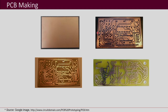Now let us look into the PCB making process briefly. PCB making starts with a copper board, and whatever is the PCB layout is drawn on that board. After that, apart from the traces and pads in the layout, the rest of the copper is etched out by a chemical process. After etching, all the holes are drilled into the board.